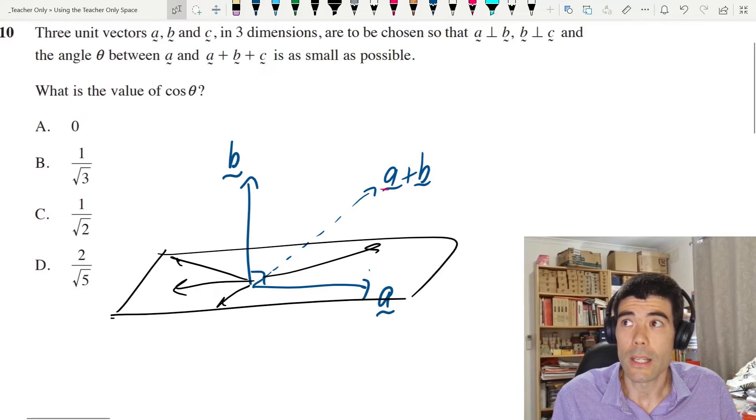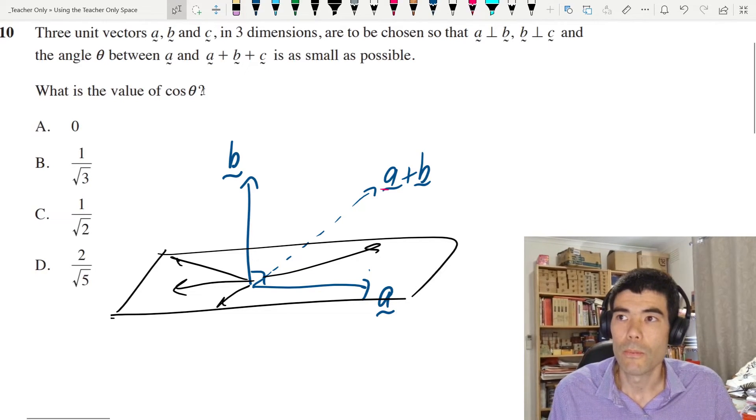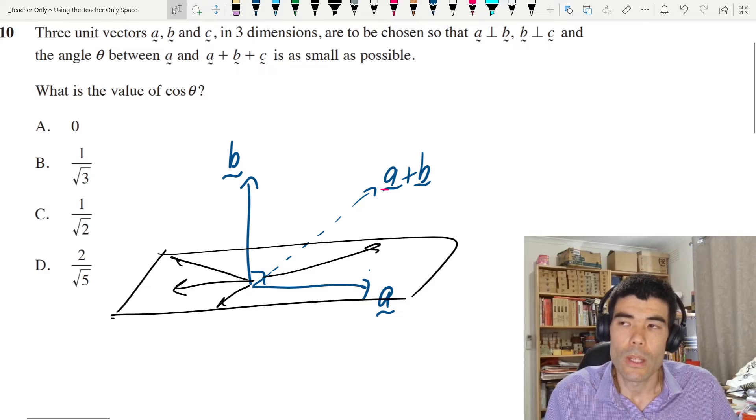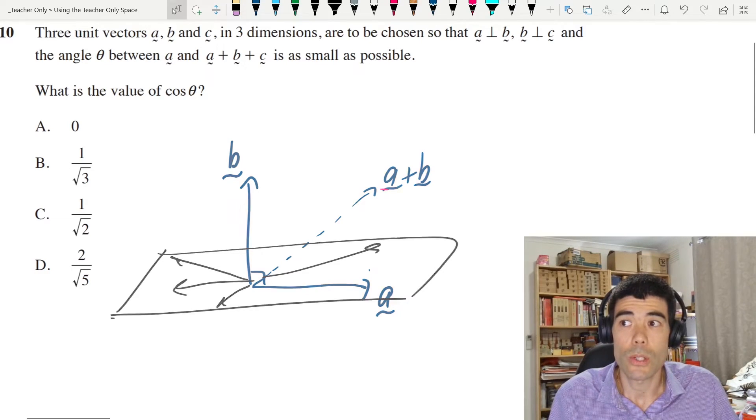And we want to choose the vector c such that the angle between a and a plus b plus c is as small as possible. So to me it makes sense that in order to do that we actually want to choose c to be parallel to a.